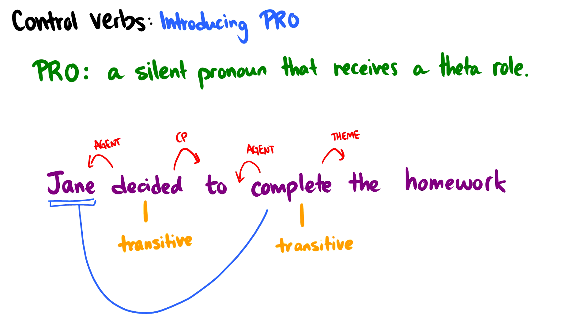Well, we introduce big PRO, and this is a silent pronoun that is indexed with its controller, which is Jane. So Jane is the one controlling big PRO, and with this little trick, we can get around having to have two Janes, and we can say the agent of complete and the agent of decided are the same person, but the agent of complete is a silent pronoun.